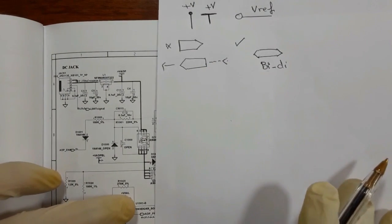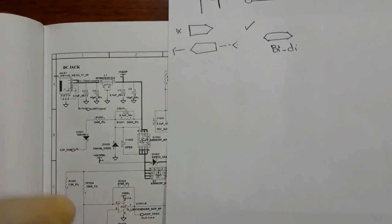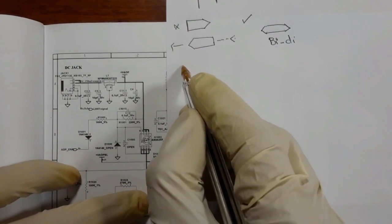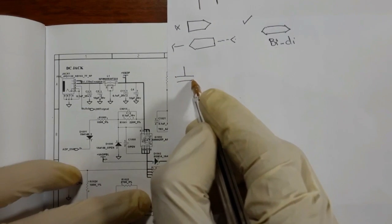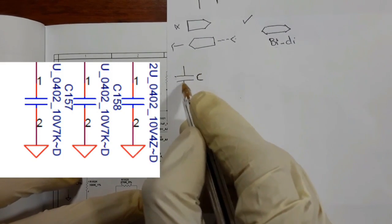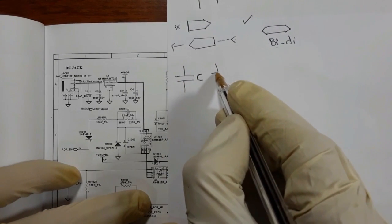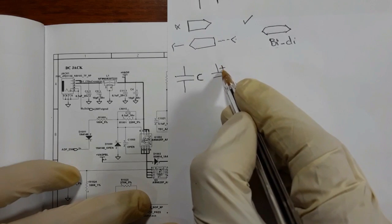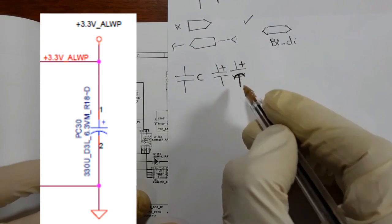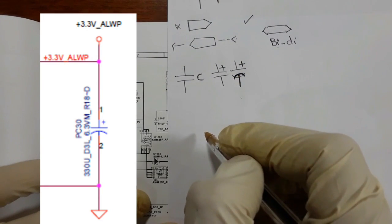Now we will see the symbols of the components that we will use in the schematic. The first symbol is the symbol for the capacitor — as you can see, this is a capacitor. This symbol means a ceramic capacitor. This symbol with a plus here, or even this one with a plus, means a chemical capacitor or polarized capacitor.